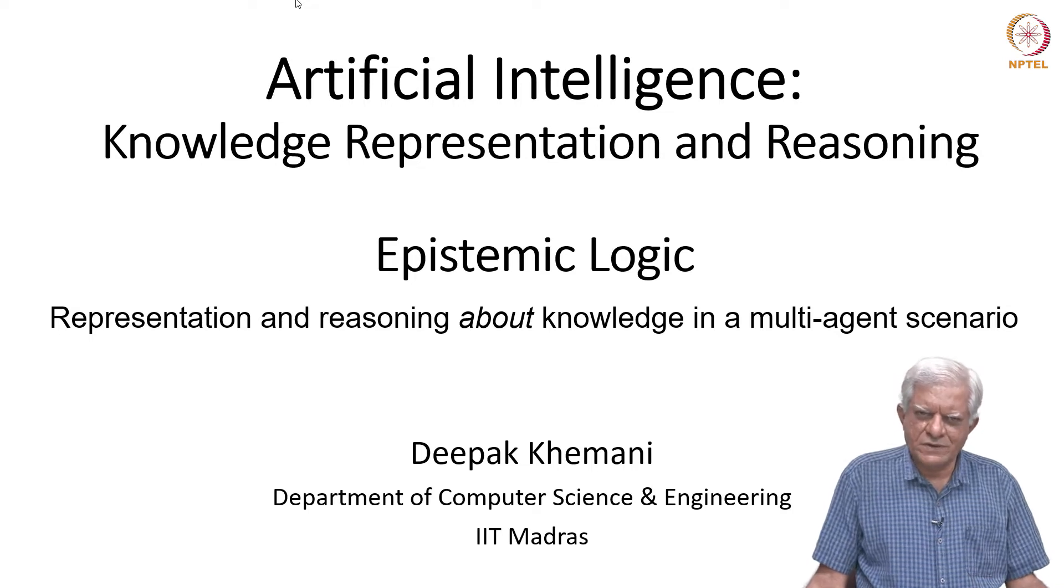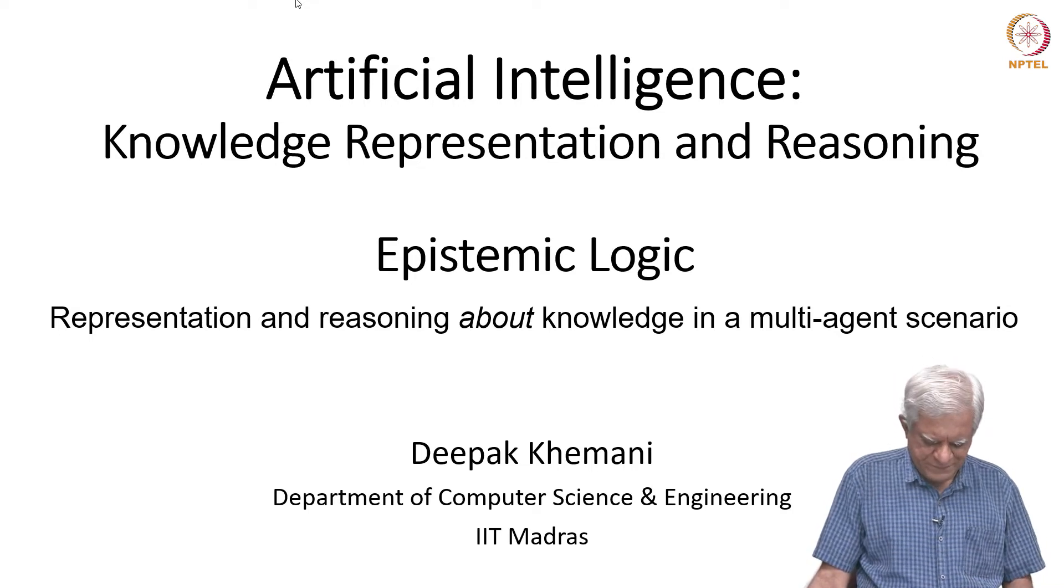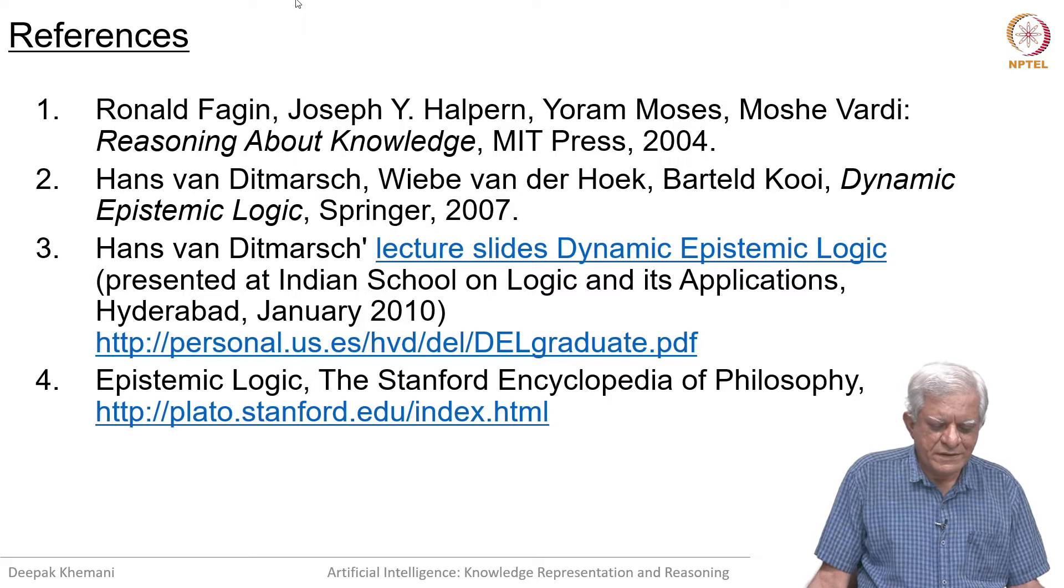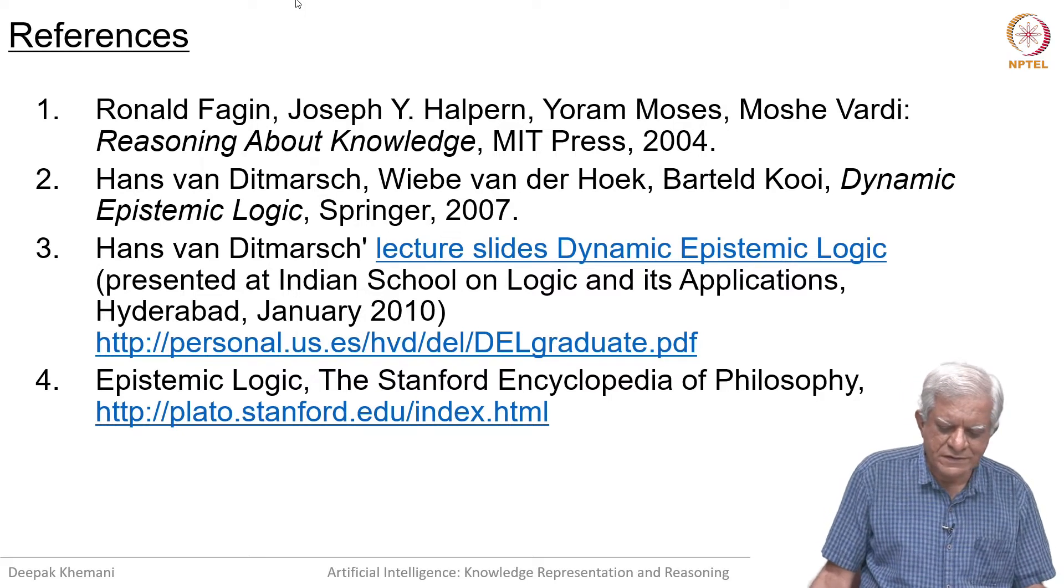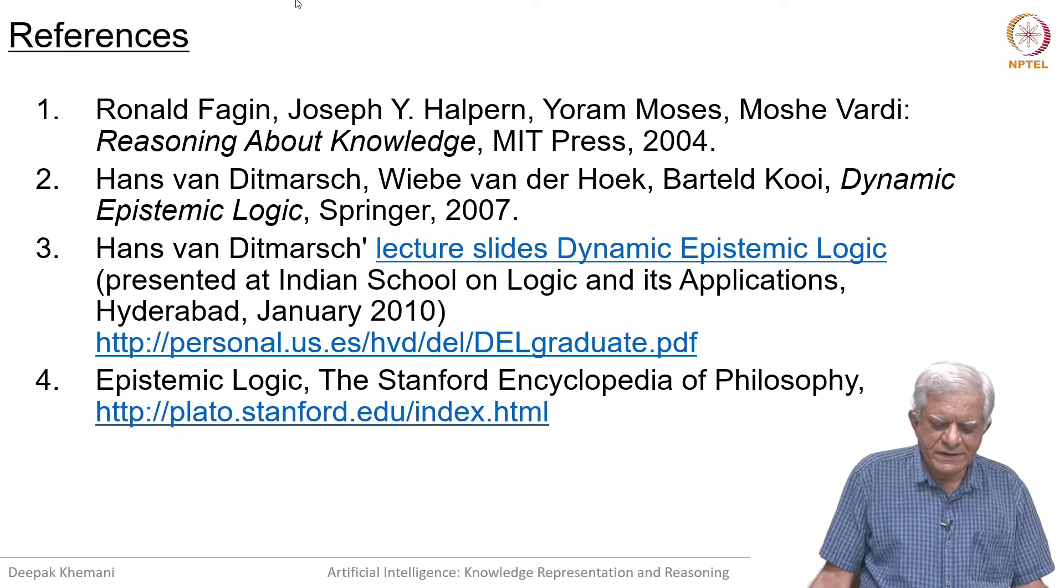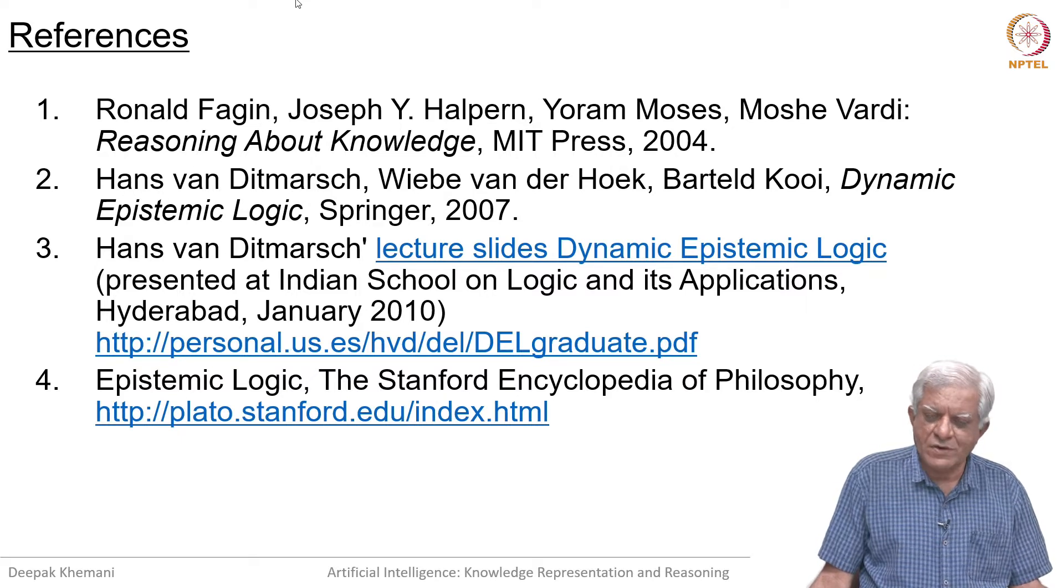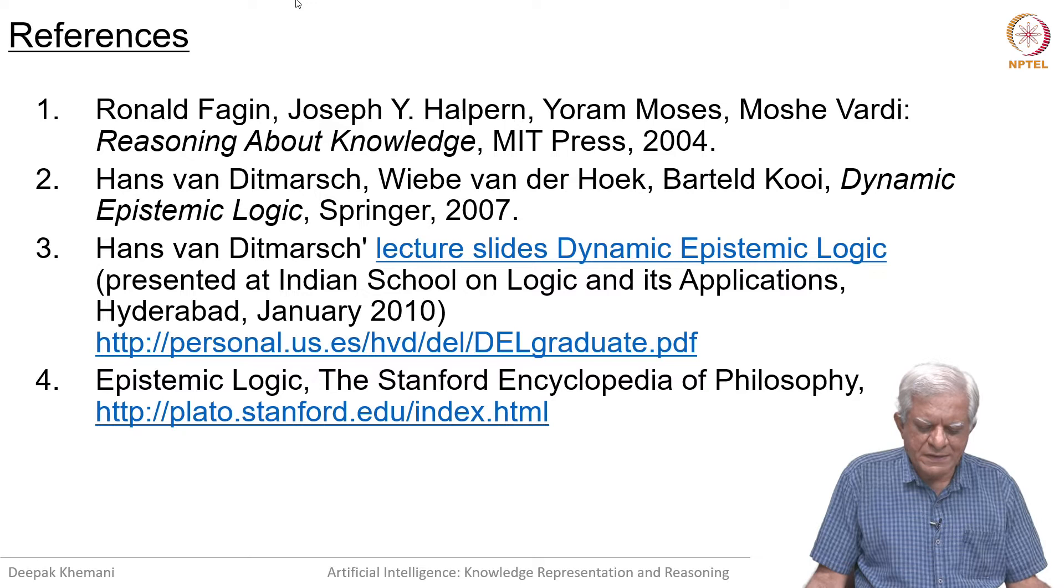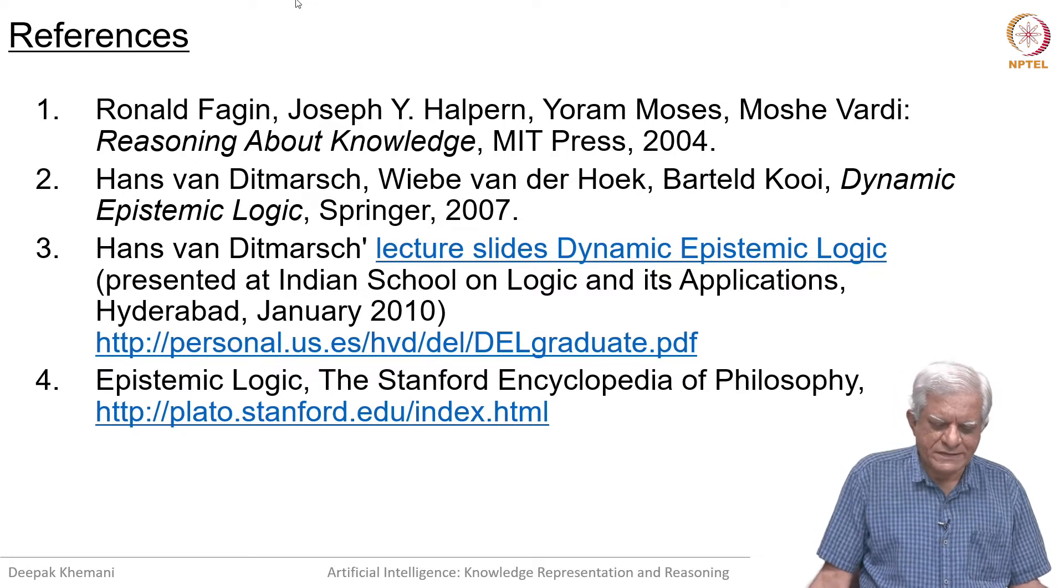We shall have a very quick tour of epistemic logic. Let us begin with a puzzle after we have looked at the references. The main reference is the first one, this book called Reasoning About Knowledge. It is about 15, 16, 17 or 18 years old by now, but there are other references also.